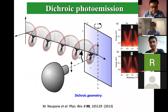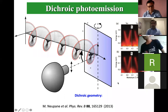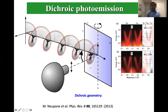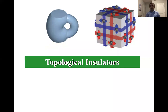We can also perform dichroic photoemission. Using circularly polarized light - left or right circular polarization - and taking the difference between the two, you can clearly see orbital signatures. This is very important for topological insulators because they have very strong spin-orbit coupling. The polarized light couples with the orbital character and you can clearly see a blue-red signal, which is the dichroic signal. Dichroic photoemission is important for getting orbital information especially from these quantum materials.